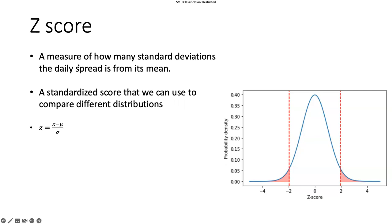The last step is to convert the spread to something called z-score. Z-score is a standardization technique. We have different scales, but now we want to compare them at the same scale. This is a measure of how many standard deviations the daily spread is from its mean. It's a standardized score that we can use to compare different distributions.